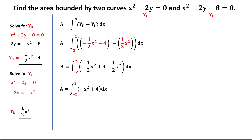Now we find the antiderivative. Using the power rule, adding 1 to the exponent: negative x squared becomes negative x to the power 3 over 3. The integral of the constant 4 is 4x. So the antiderivative is negative x cubed over 3 plus 4x, evaluated from negative 2 to positive 2.